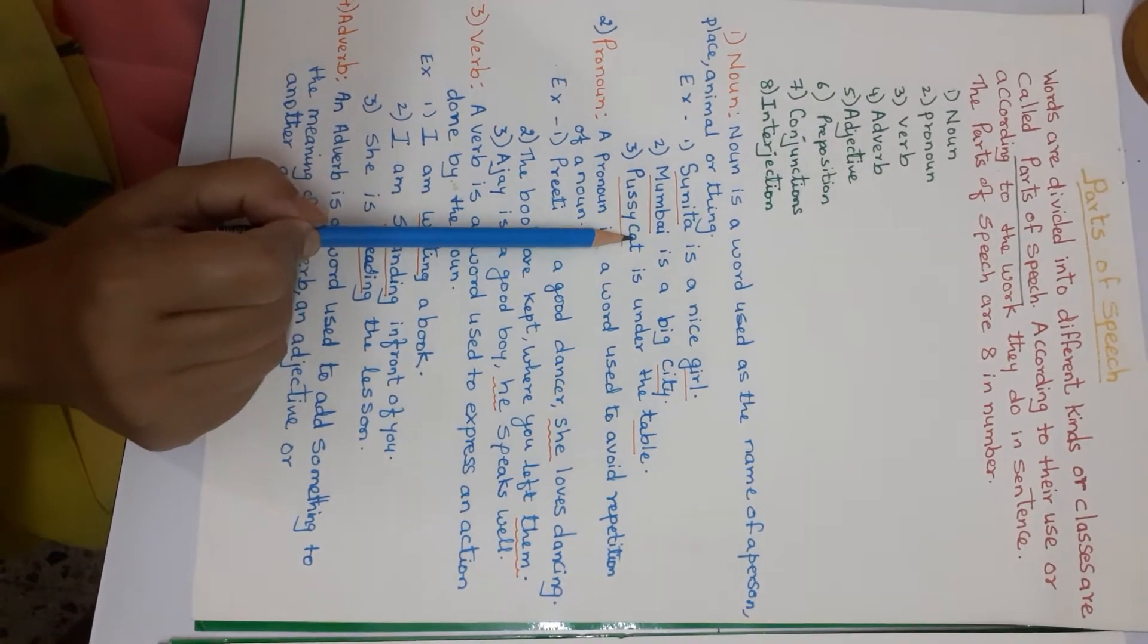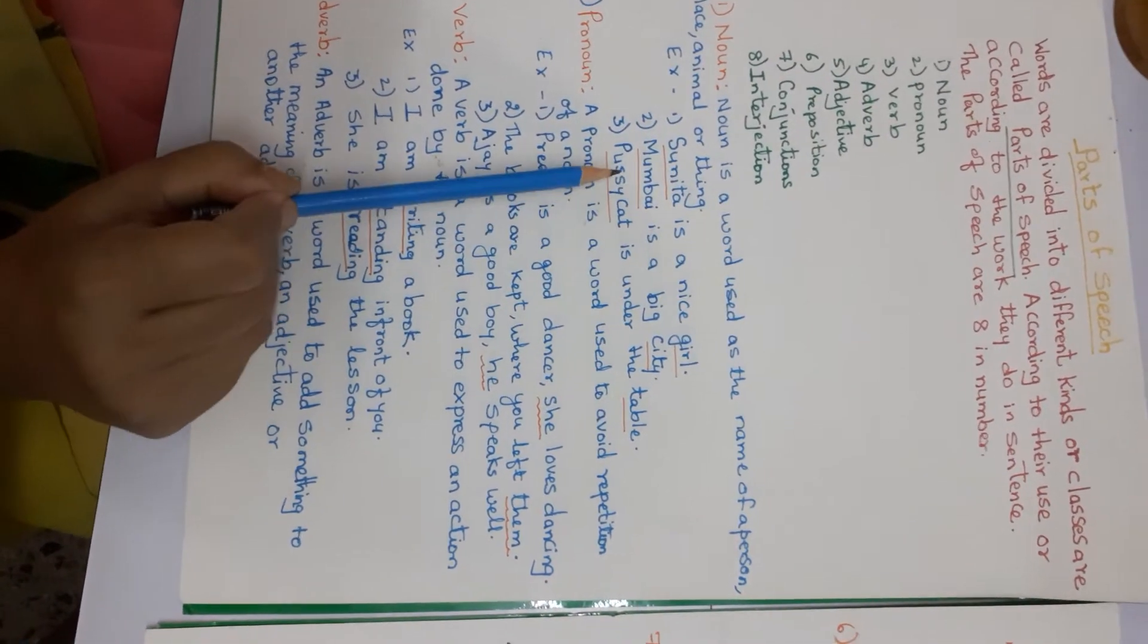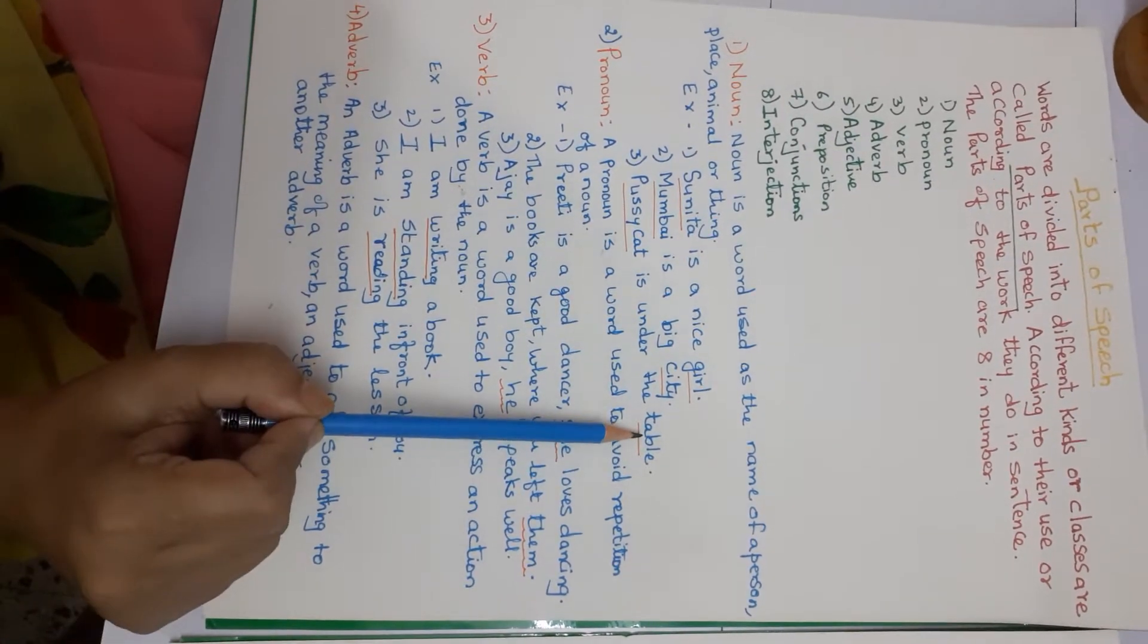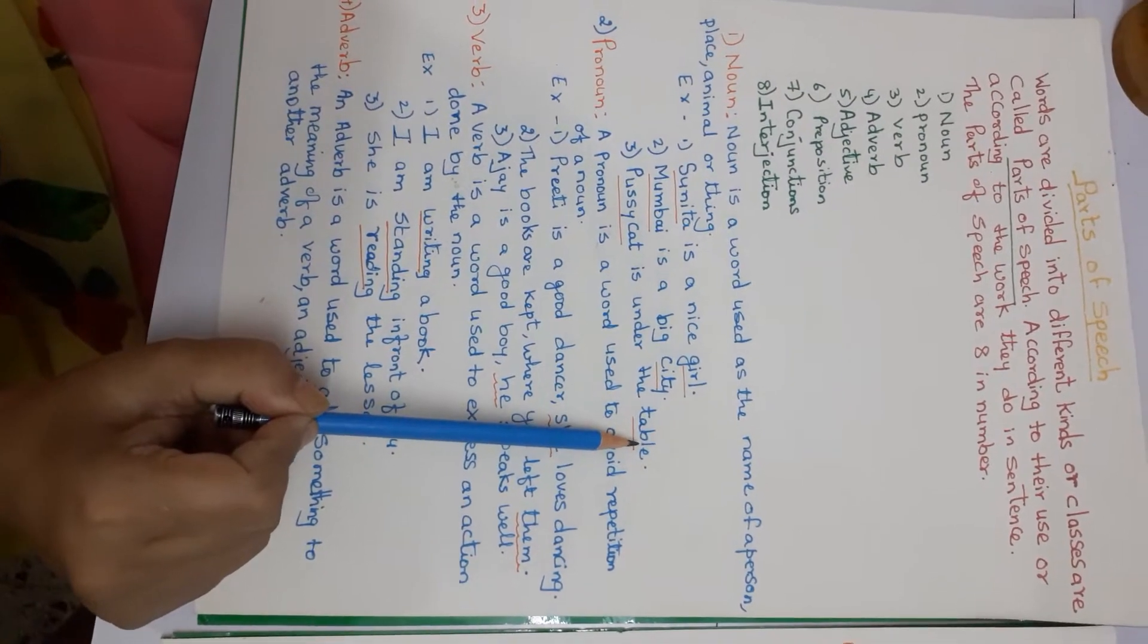Pussy cat is under the table. Pussy cat is a noun. Even table is a noun. It's the name of a thing.